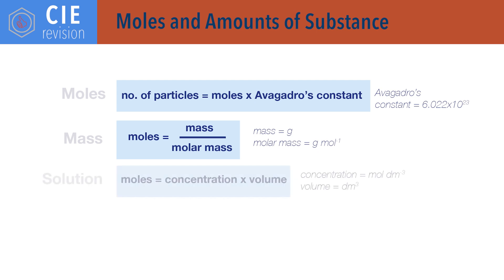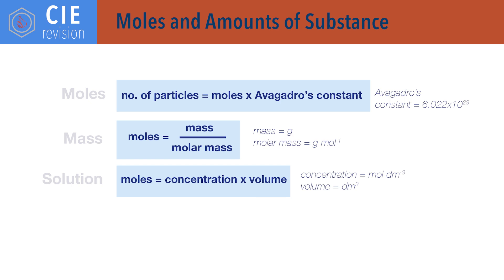Moles equals concentration times volume. Note that the units for concentration are usually moles per decimetre cubed and volume should therefore also be in decimetres cubed. To convert the more common volume unit of centimetres cubed to decimetres cubed, divide by 1000.